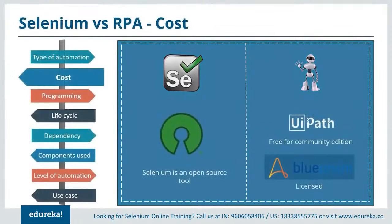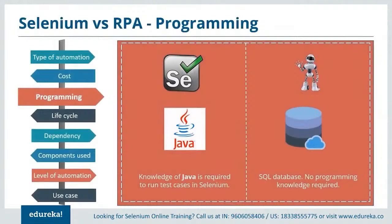Regarding cost: Selenium is an open source tool, so it's free. RPA has a set of tools — UiPath, Automation Anywhere, and Blue Prism. UiPath is free for community edition with licensed advanced versions. Automation Anywhere offers a free trial for one month with licensed advanced versions. Blue Prism is completely licensed. On programming knowledge: Selenium requires knowledge of Java to run test cases, whereas RPA requires no coding knowledge as it handles backend processes and database operations.